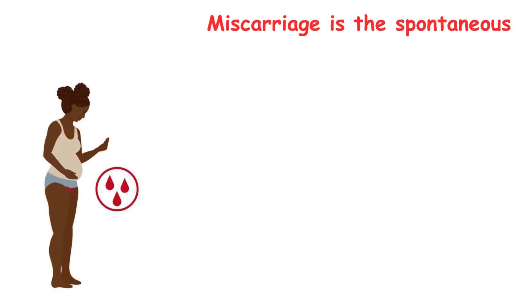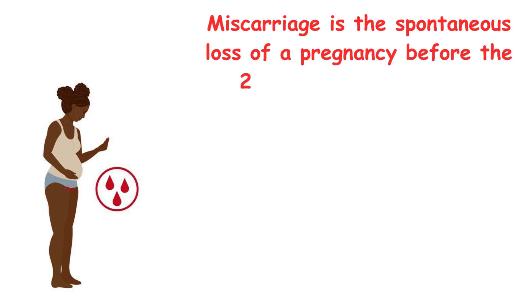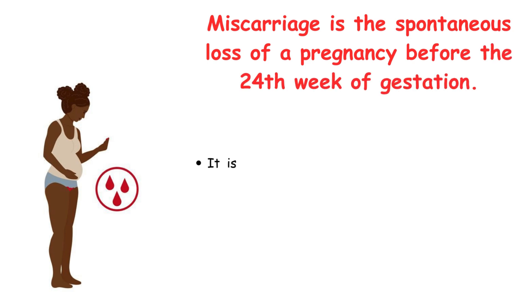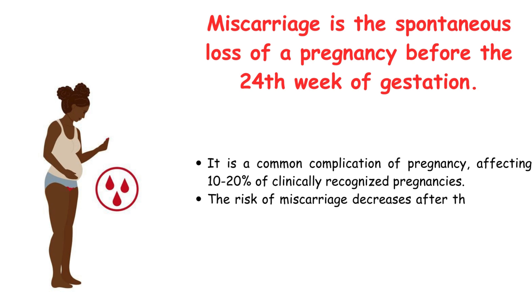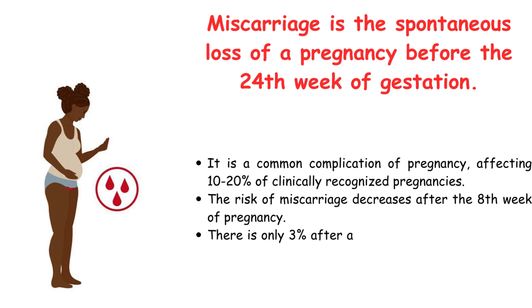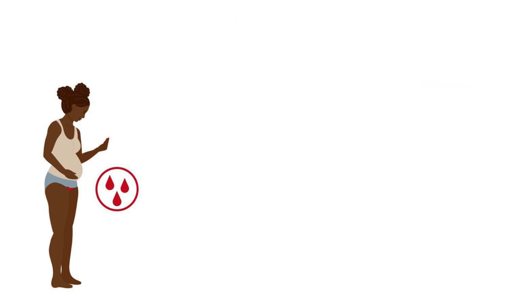Miscarriage is the spontaneous loss of a pregnancy before the 24th week of gestation. It is a common complication of pregnancy, affecting 10-20% of clinically recognized pregnancies. The risk of miscarriage decreases after the 8th week of pregnancy, with only 3% risk after a viable fetus has been seen on ultrasound.